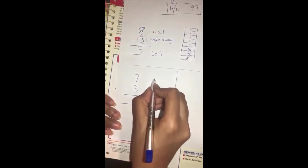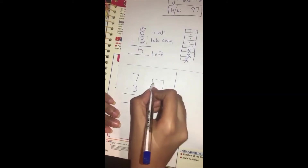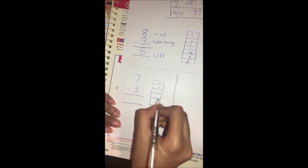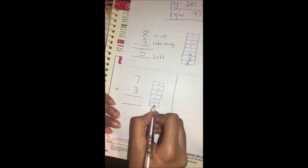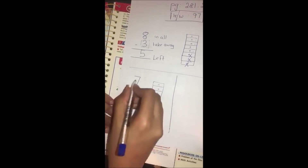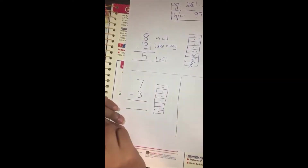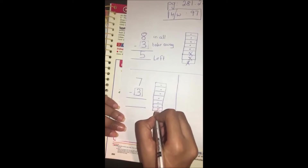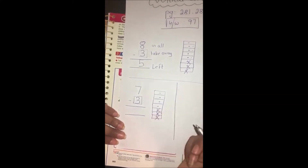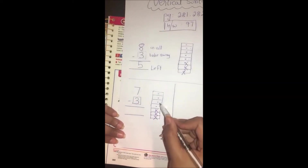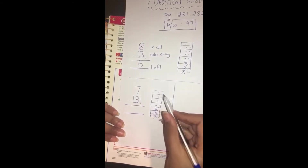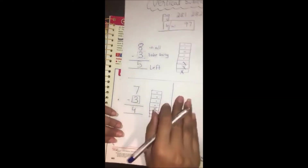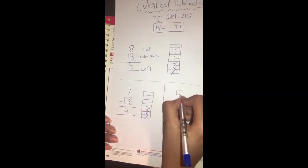Now over here we have the vertical. 7 minus 3. Let's make 7 blocks or 7 cubes: 1, 2, 3, 4, 5, 6, 7. 7 in all. How many are we going to take? 3. Take 3: 1, 2, 3. How many left? 1, 2, 3, 4. 7 minus 3 gives us 4.